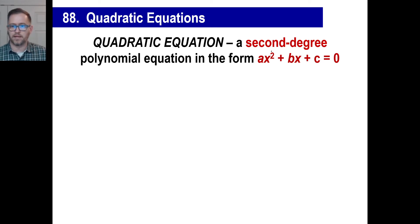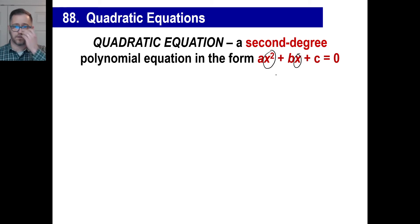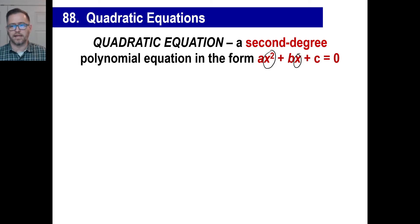It'll have an x squared, and it'll have an x, and it'll have a constant — in other words, just a number that doesn't have an x attached to it. It could be a negative number, it could be a positive number. Don't worry about how complicated this looks. All you're worried about is that it's an equation, and it has an x squared in it, and it has an x and another number in it. That's all.